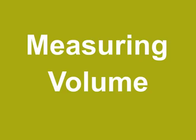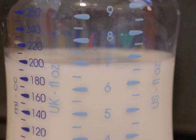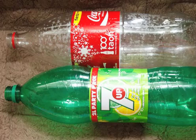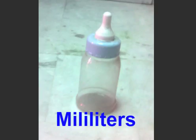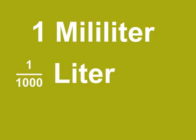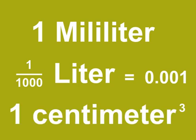Measuring volume. Volume is space occupied by matter. The volume unit is the liter. Soda pop is often sold in one liter bottles. Small volumes are measured in milliliters. One milliliter equals one one-thousandth liter. One milliliter is also equal to one centimeter cubed.